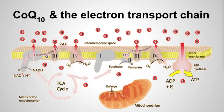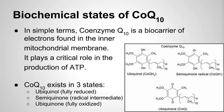CoQ10 is a fascinating molecule because it's a biocarrier that exists in both fully oxidized and fully reduced states, moving between the multiprotein complexes. On complex 3, there's a cycle called the Q-cycle, where oxidation of the ubiquinol molecule releases two protons into the intermembrane space and causes reduction of another ubiquinone to ubiquinol, which is stored in a pool for use when needed. In summary, CoQ10 is a biocarrier of electrons in the inner mitochondrial membrane, critical for ATP production, and exists in three states.